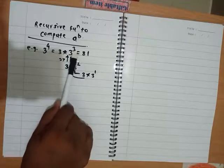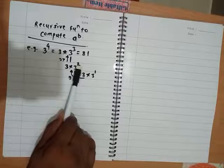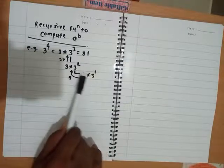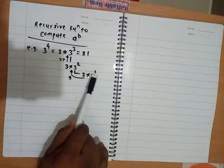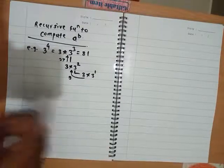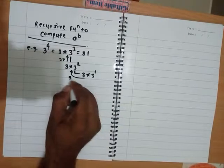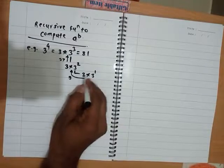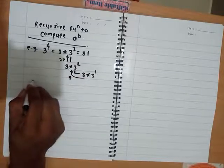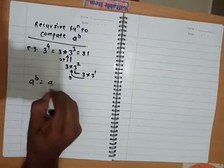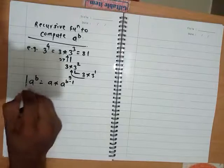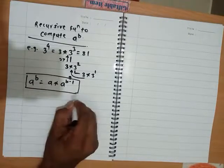In order to compute 3 raised to 3, I need to know 3 raised to 2. I don't know 3 raised to 2 directly, so I use the same function. 3 squared is 3 into 3 raised to 1, and when I have 3 raised to 1, I know it is 3. So in general, a raised to b is equal to a into a raised to b minus 1.